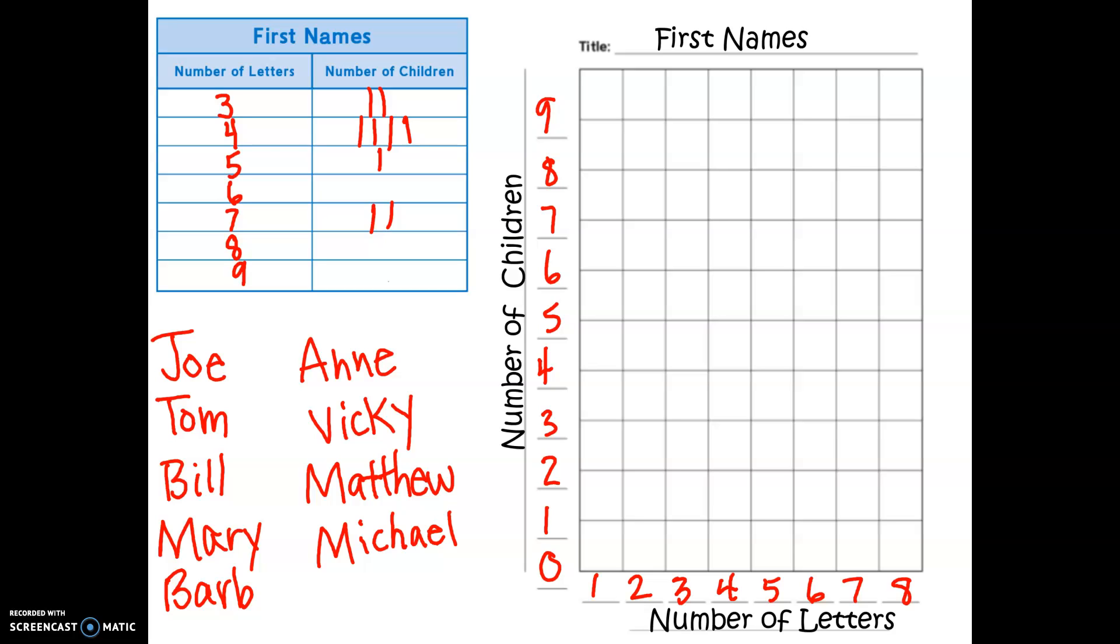What I did is I just wrote down all my brothers and sisters' names, and then I counted how many letters were in their name and how many of each of my brothers and sisters had that many numbers of letters in their name. So the title of our bar graph is first names. Number of children, our scale, I just went 0 through 9. And the number of letters and names: 1, 2, 3, 4, 5, 6, 7, 8. So we're going to take the information from our tally chart right here to help make our bar graph.